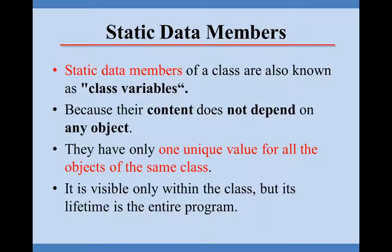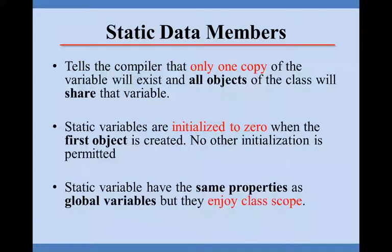They have only one unique value for all the objects of the same class. It is visible only within the class, but its lifetime is the entire program. This tells the compiler that only one copy of the variable will exist for all the objects.